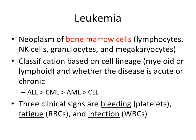Lastly, we're going to talk about leukemia, which is a really convoluted disease — this could have its own 30-minute video. I'm simplifying and keeping just the highest-yield stuff for the Part 2 board exam. Leukemia is a neoplasm of bone marrow cells — including lymphocytes, natural killer cells, granulocytes, and megakaryocytes — mostly white blood cells, but it also affects red blood cells and platelet production.